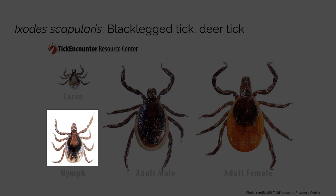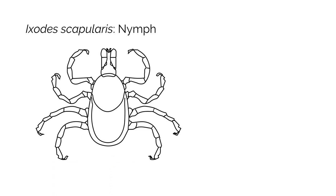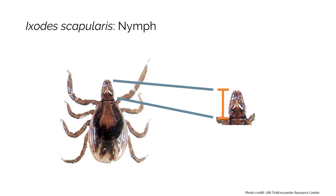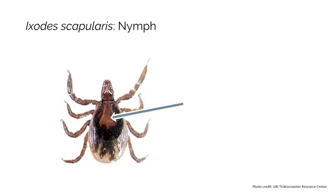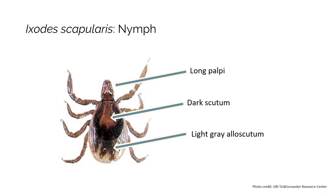Now let's look at the nymphal stage black-legged tick. Once again, there are three body parts of a tick that can be useful in photo identification: the mouthparts and palpi, the scutum, and the alloscutum. Like the rest of the Ixodes ticks, the nymph has palpi that are longer than the width of the basis capitulum. The scutum is dark in color and the alloscutum is a light gray in color. These three characteristics are key to identifying black-legged tick nymphs.